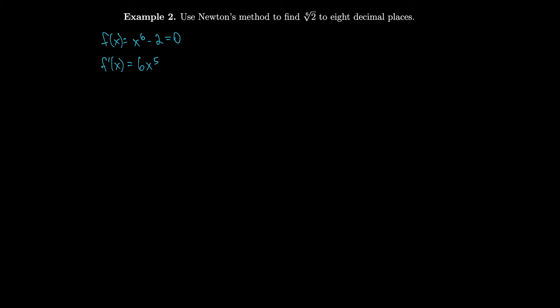So we have everything we need to use Newton's method. xₙ₊₁ = xₙ - f(xₙ)/f'(xₙ). And in this case, that's equal to xₙ - (xₙ⁶ - 2)/(6xₙ⁵).